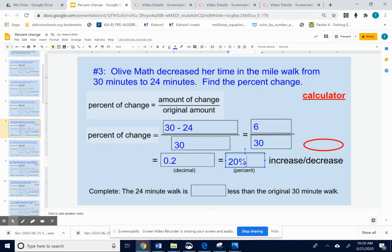20%. Okay, so think for a minute. Is she increasing her time or decreasing her time? Okay, it went from 30 to 24. Okay, so that would be a decrease in time.